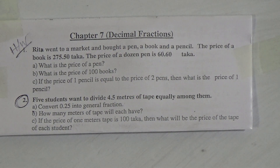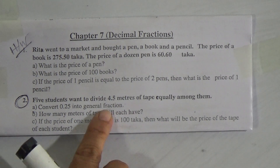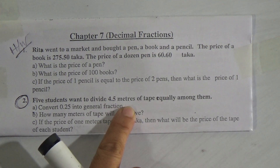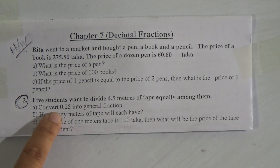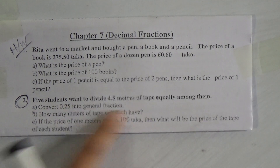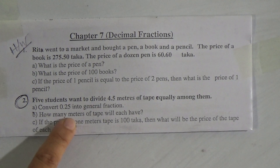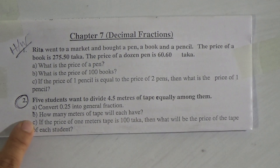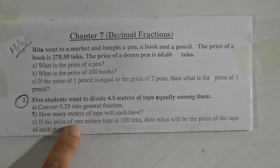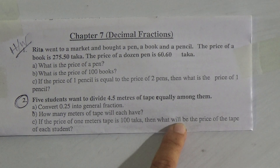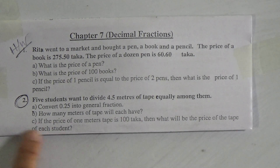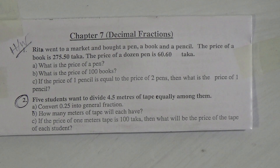Now my dear students, look at question number 2. Five students want to divide 4.5 meters of tape equally among them. Part A: convert 0.25 into a general fraction. Part B: how many meters of tape will each have? Part C: if the price of 1 meter of tape is 100 taka, then what will be the price of the tape of each student? Now, the solution of A — look here.